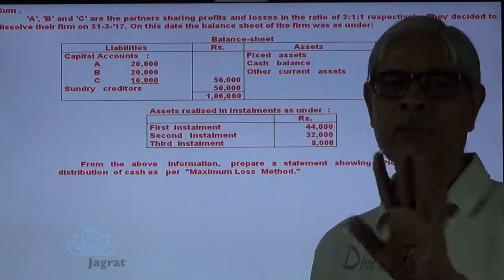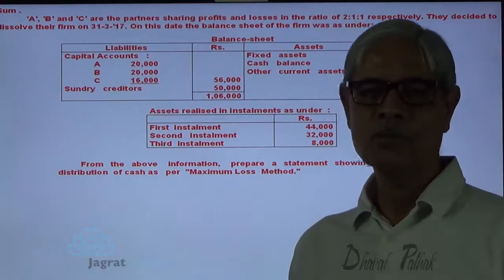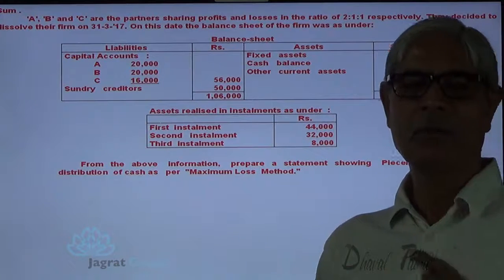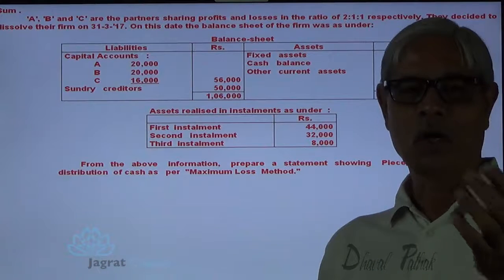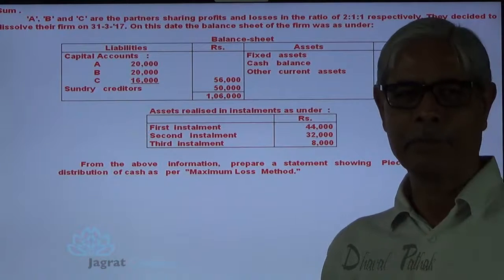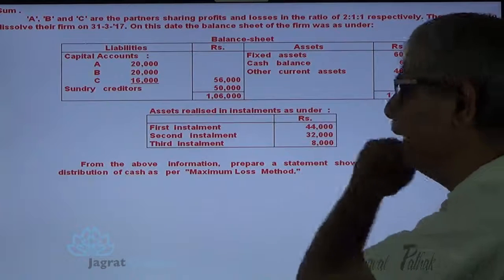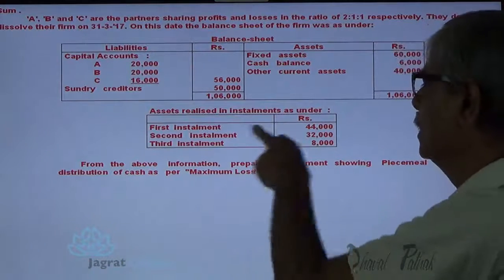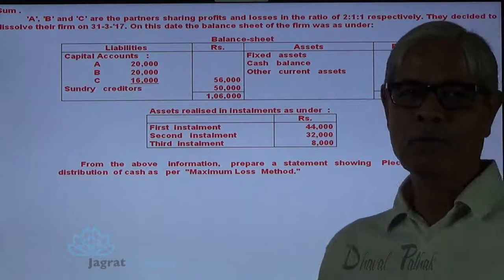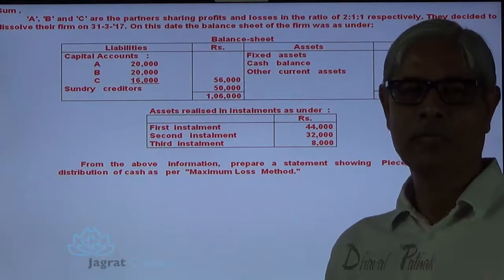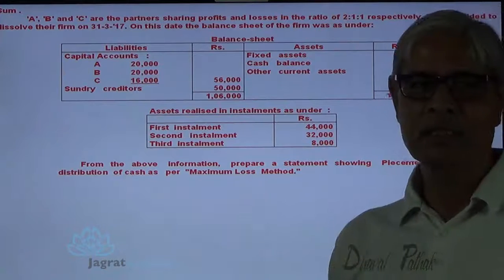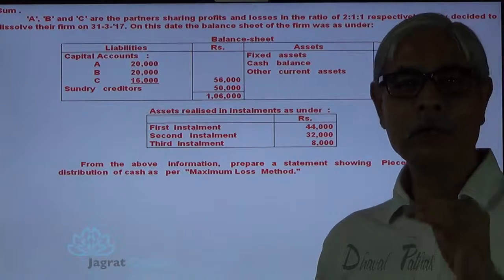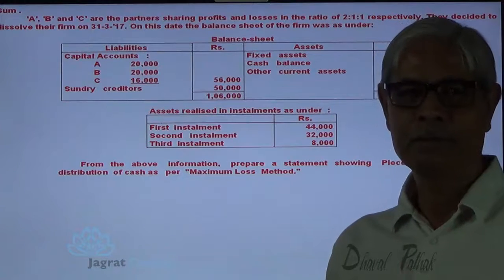But in that sum, the realized value of assets — 84,000 — is taken or presumed to have been realized at one point in time. In case of piecemeal distribution, the same 84,000 are realized gradually: first installment 44,000, second installment 32,000, third installment 8,000. So the amount is realized gradually. Out of this 44,000, how much payment should be made and to whom, and in what priority?